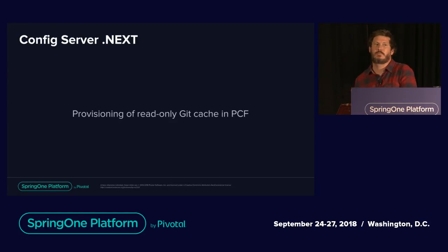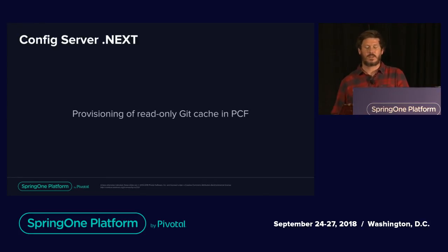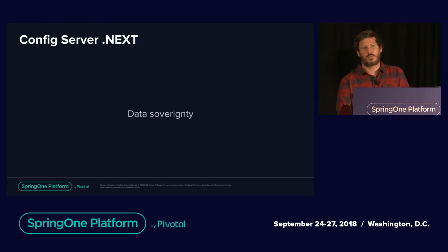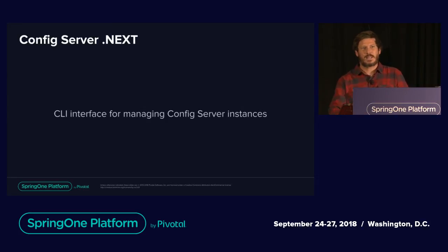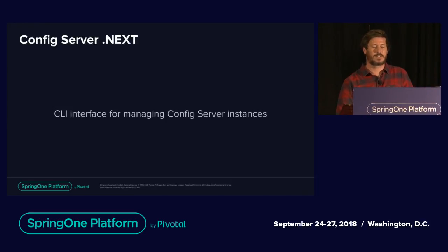A read-only cache in PCF: you've got your upstream Git server — GitHub or your own Bitbucket — and Config Server is going to mirror those, so the actual Config Server will talk to a local mirror. The main reason is so you don't have to constantly hit the network, and you can have data local to your PCF foundation. Data sovereignty is one reason — for GDPR reasons you might need certain data in certain countries, and the foundation-local mirror helps with that. Also, one of the big complaints is that creating a config server instance gives you a huge blob of JSON for configuration settings. We want to improve the user experience with a CLI that has much simpler defaults for creating config server instances.